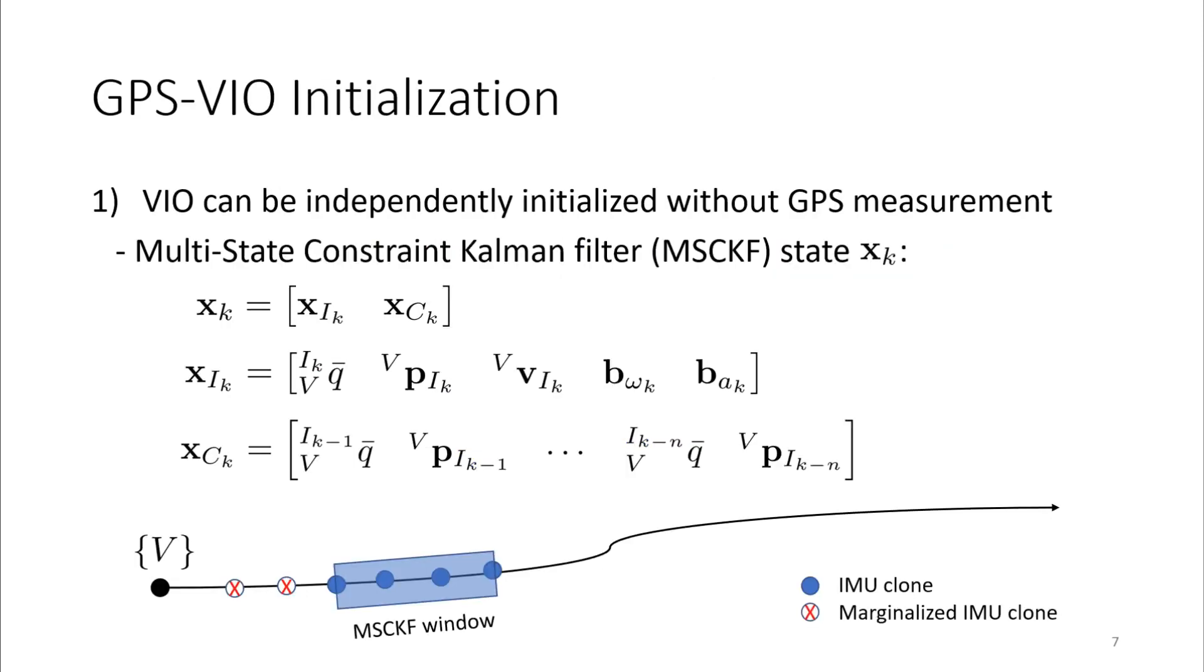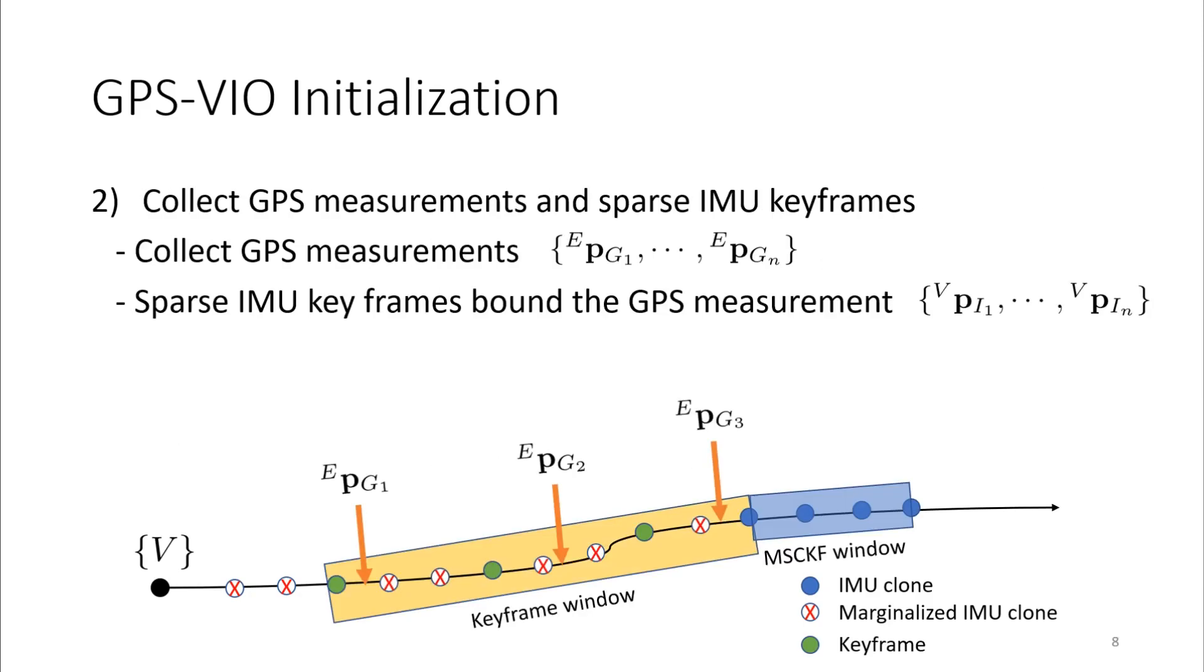Now let's move on to the initialization method. Our VIO is based on the Multi-State Constraint Kalman Filter (MSCKF) and can independently run without GPS measurement. Its state is composed of IMU pose, velocity, and biases at the current time, and the history of IMU poses at the camera imaging times.